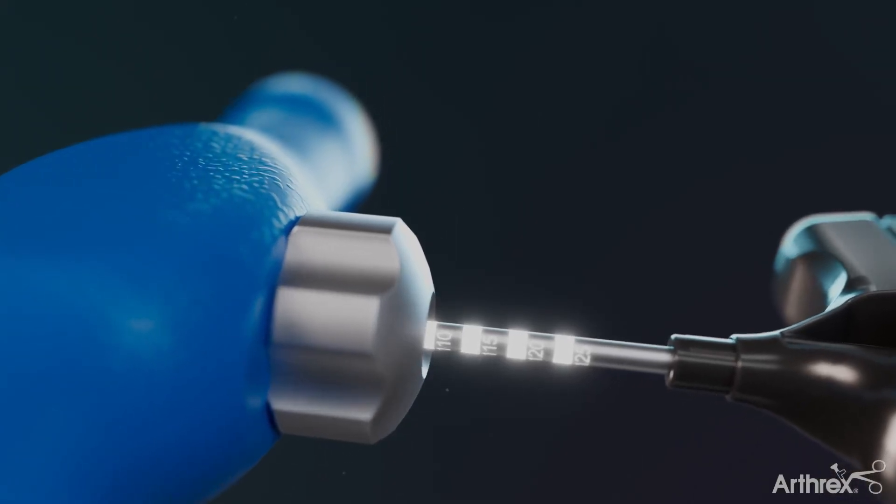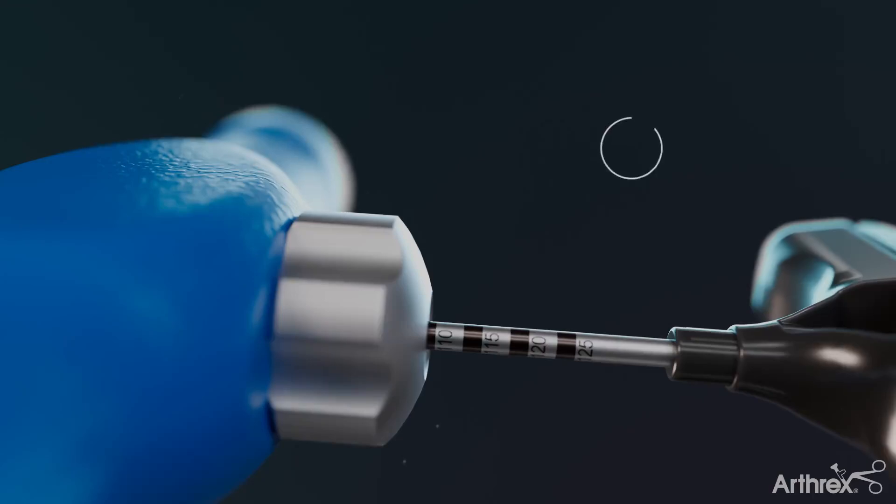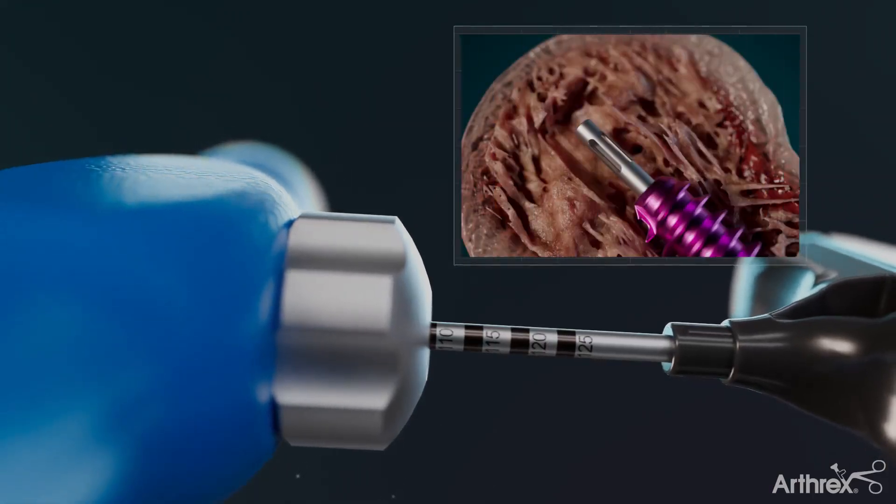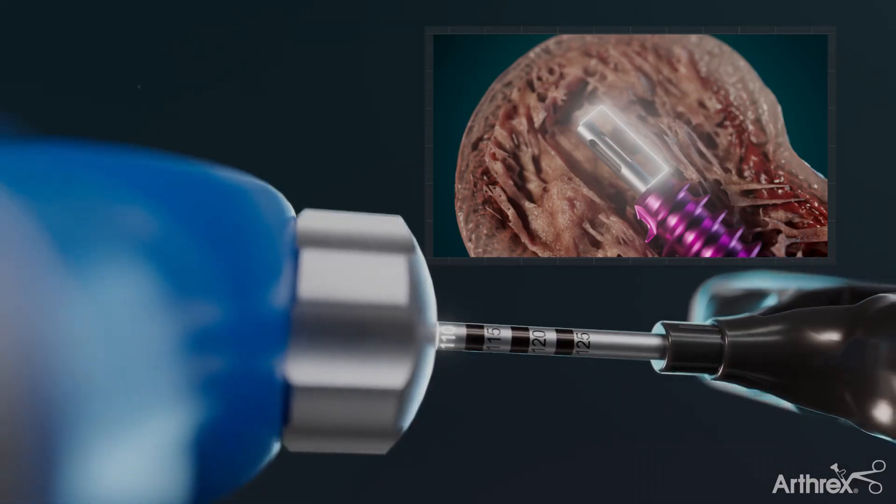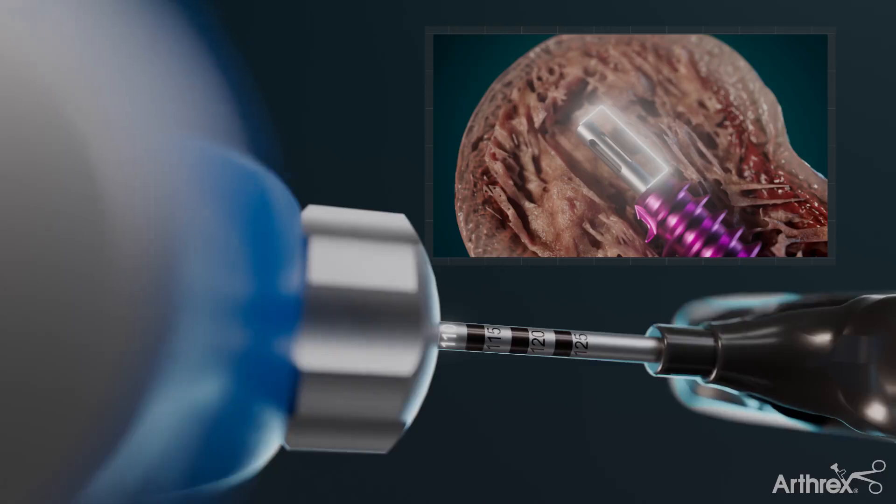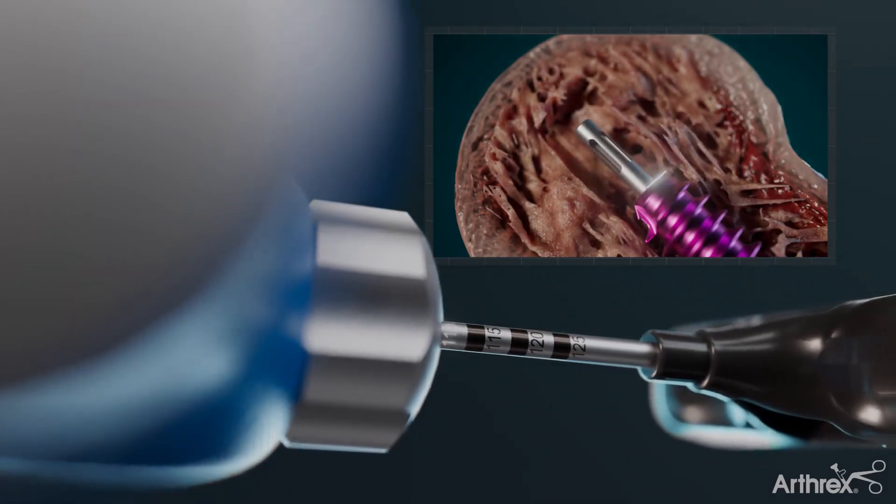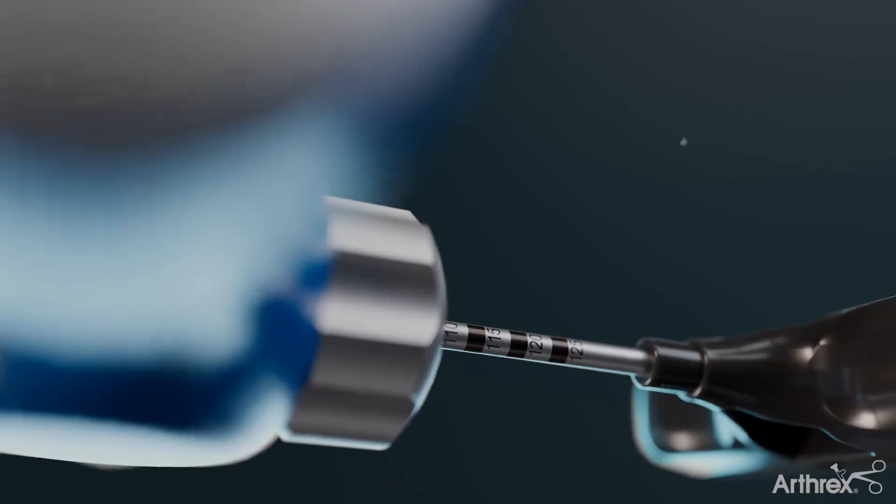If a 110mm lag screw is used, the 110 mark will be lined to the top of the blue inserter handle and result in the cannula protruding 10mm beyond the tip of the lag screw. Insert under fluoroscopic guidance and reconfirm no perforation of the femoral head has occurred.